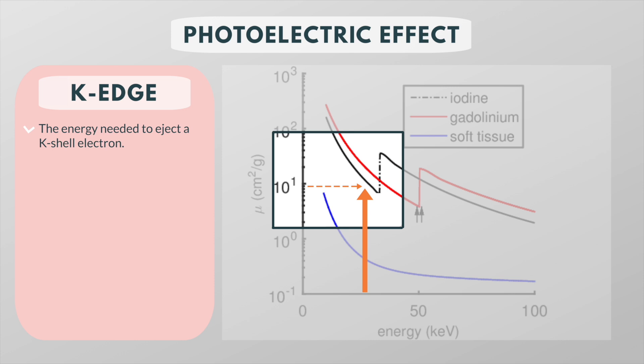In other words, at energies just below the K-edge, the photons don't have enough energy to free the K-shell electrons. As the energy increases to just over the required energy, the probability of the photon being attenuated by a photoelectric reaction significantly increases.